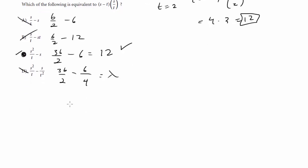But how could you do it algebraically? You can do this algebraically by realizing that this is really just testing the distributive property. So I'm multiplying s minus t times s over t, so I can just distribute this to both of these terms.